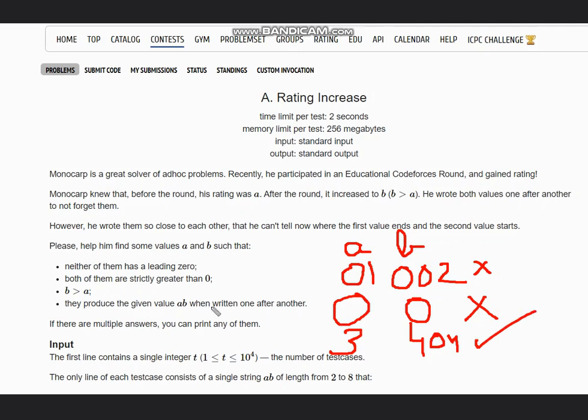They produce the given AB when written one after another. So suppose I have the joint number as 3404. After joining A and B, the string would become here also 3404.